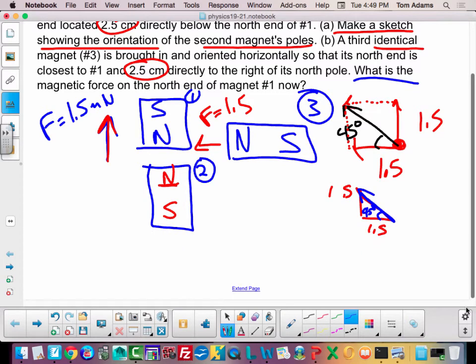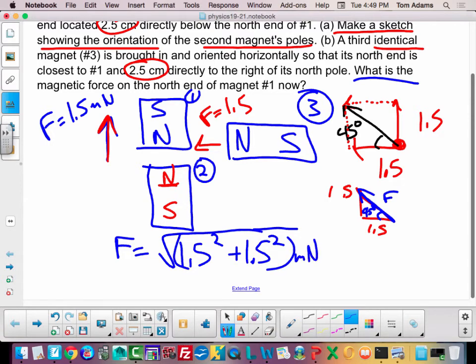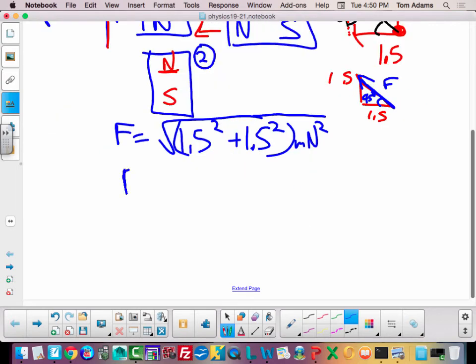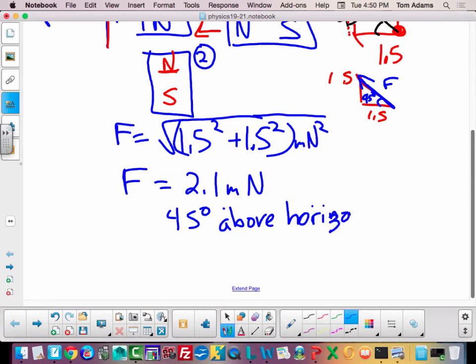So to calculate the magnitude of the force, the resultant vector force would be equal to, we just use the Pythagorean theorem. If I wanted to find this force here, I would just take the square root of 1.5 squared plus 1.5 squared, and all of that is going to be in millinewtons. And if you crank through that and you do the math, you would get the magnitude of the force would be 2.1 millinewtons, and you could say like 45 degrees above horizontal to the left.